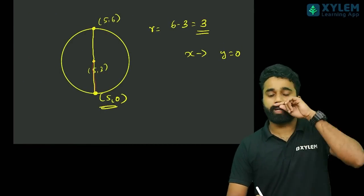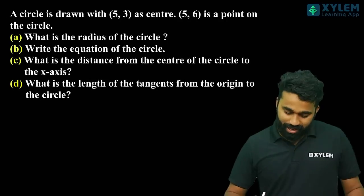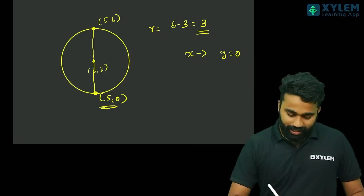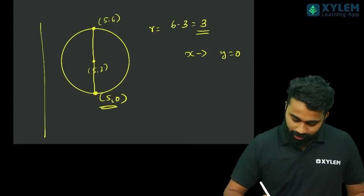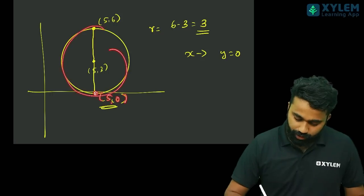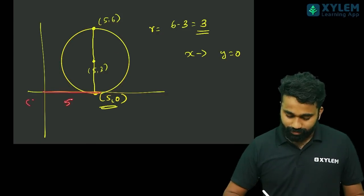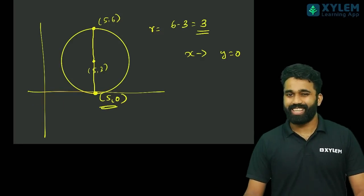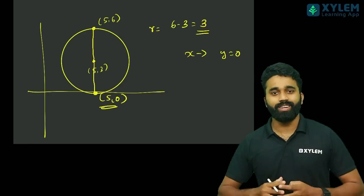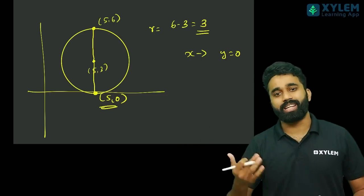So the answer to the question — the length of the tangent from the origin to the circle. Now this figure is the answer. Now more than x is (5, 0) plus value. You can save this — this chapter allows you to practise right here. You can use the method and learn these two answers.